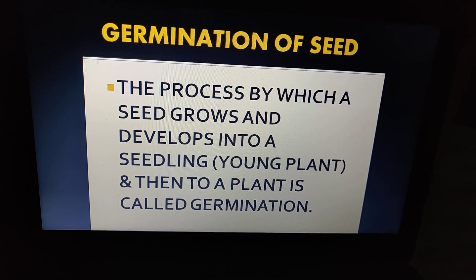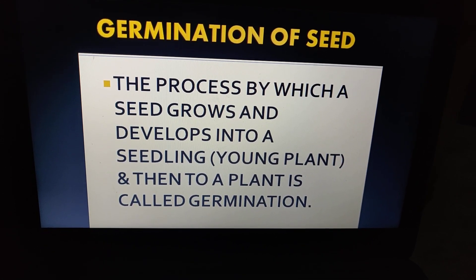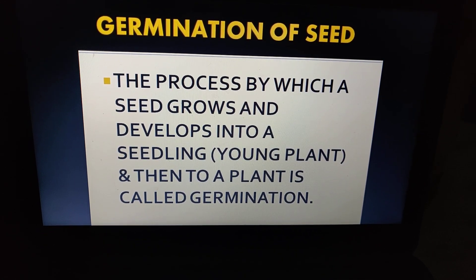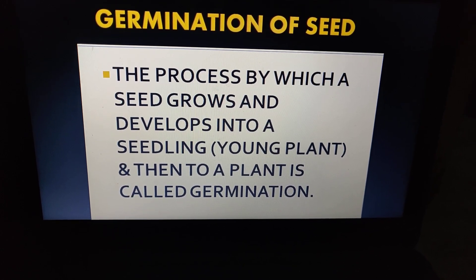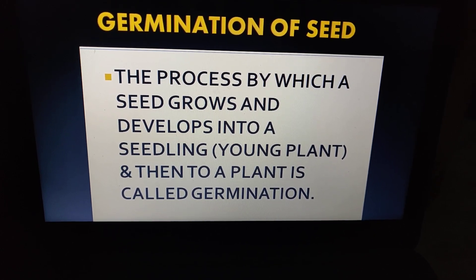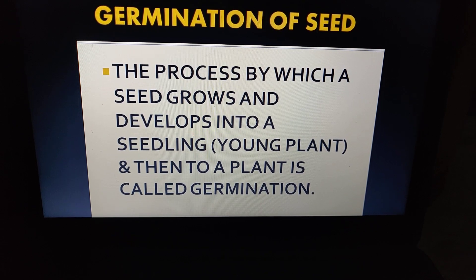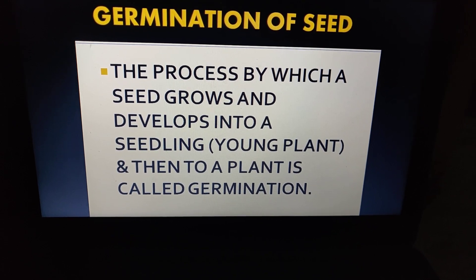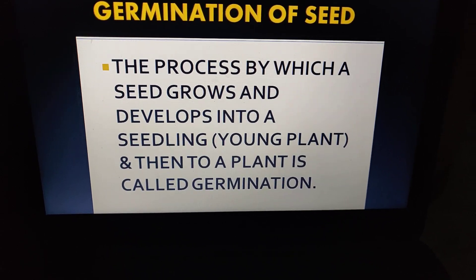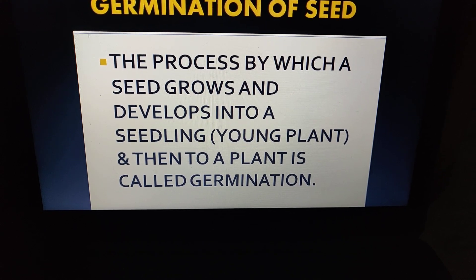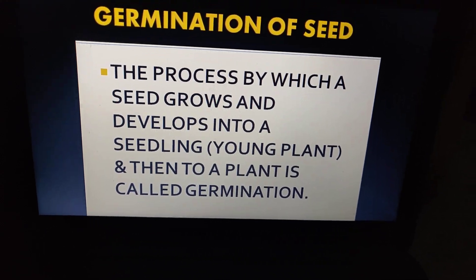This process of a plant growing from a seed is also known as germination of seed. The process by which a seed that we have put in a pot grows and develops into a seedling — meaning it becomes a small plant and then a plant — is called germination.